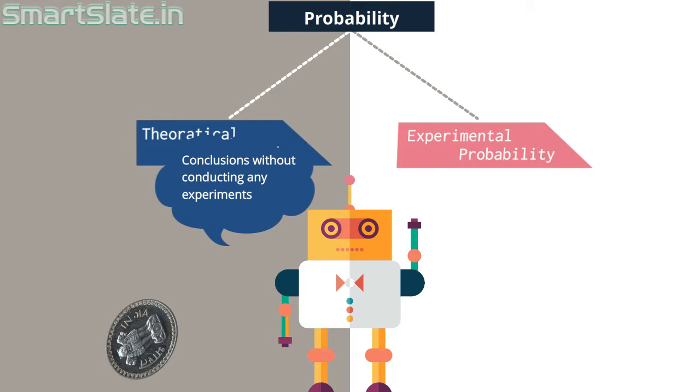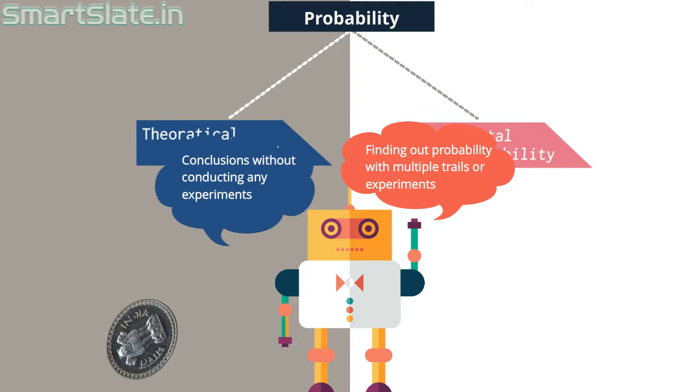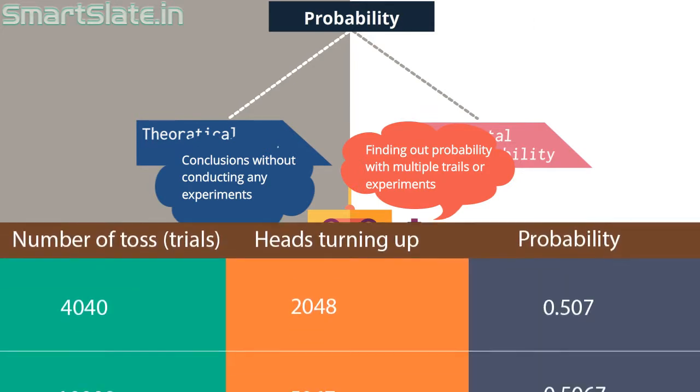What is the experimental probability then? If you find out probability with multiple trials or experiments then it is called experimental probability. That is, you toss a coin and each time you record the observation, and then finally you find out what is the probability of occurrence of head.